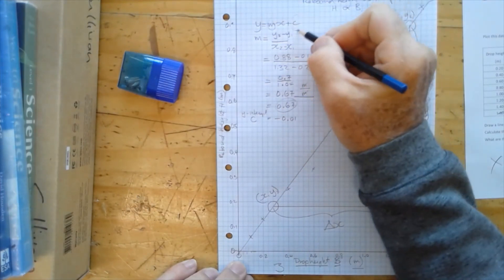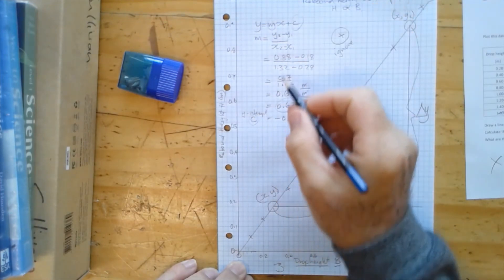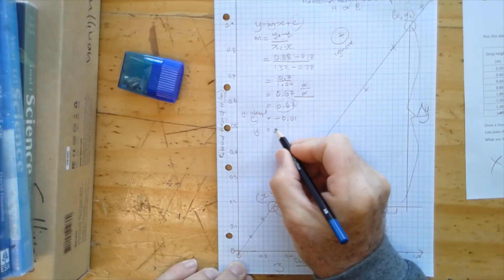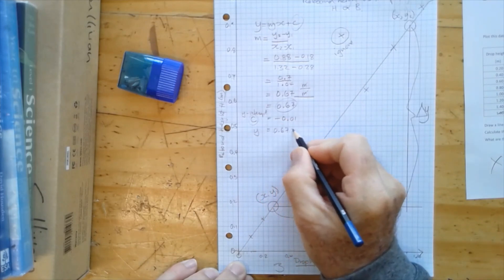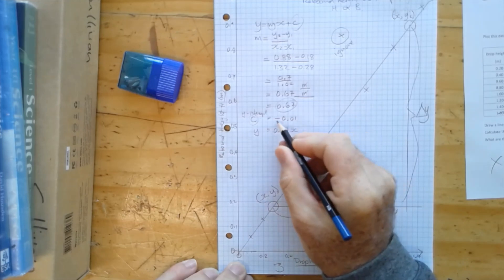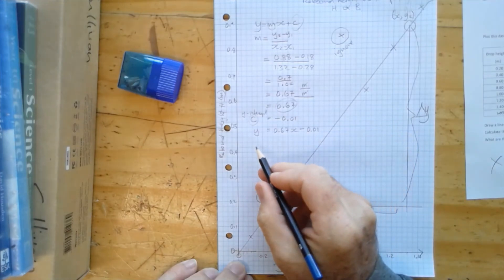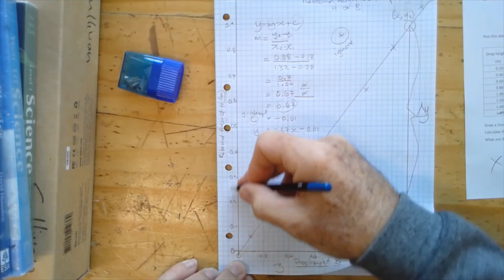And we've got our y-intercept c. So we can write this equation: y is equal to 0.67 x plus negative 0.01. We're nearly there, but of course this is not y.